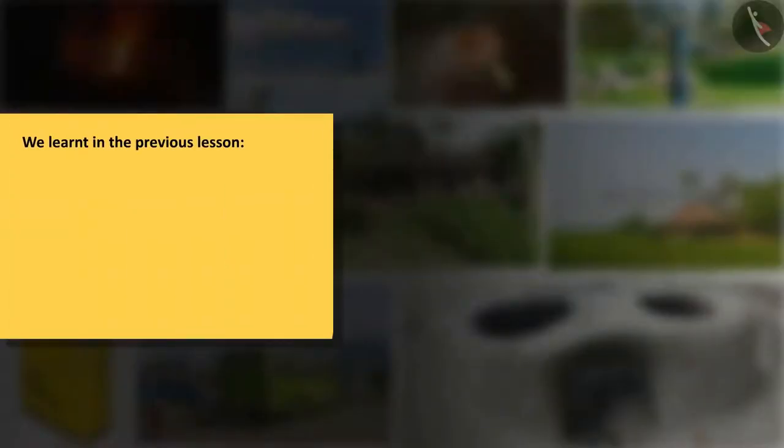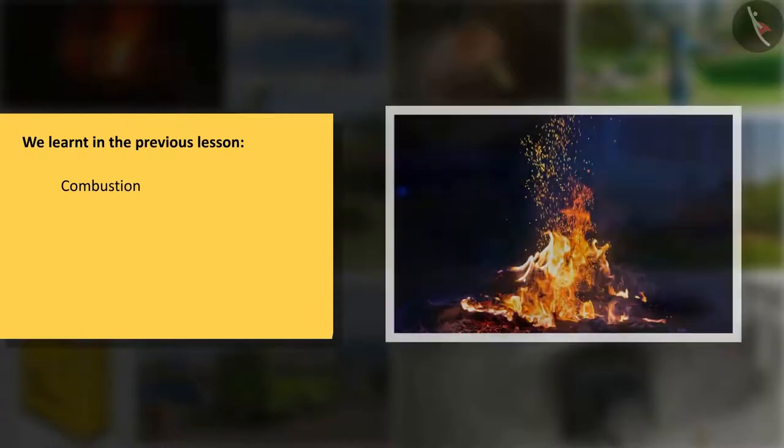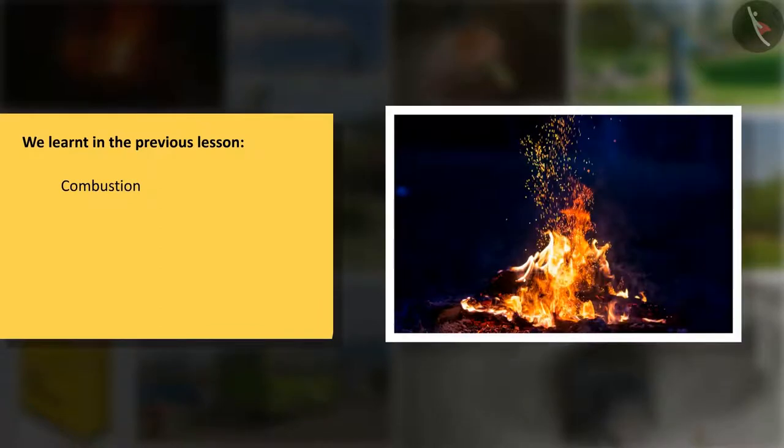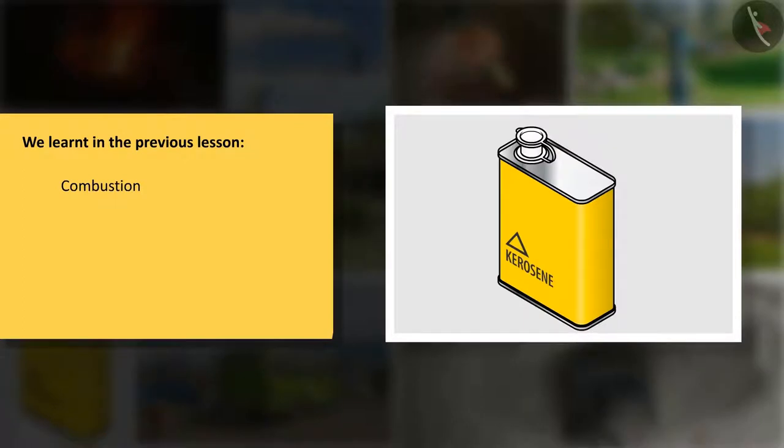We learnt in the previous lesson, fuel can burn only when there is steady oxygen in the form of air to support it. The process of burning of fuel to produce heat or light is called combustion. We use a variety of fuels like kerosene, wood, coal, LPG in our daily lives.